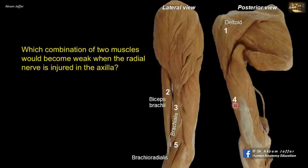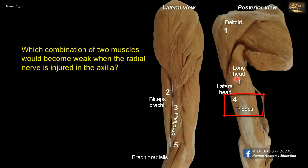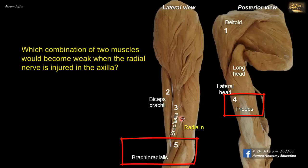And four is the triceps muscle. You can see here that only two heads of triceps are seen: the long head of triceps, arising from the infraglenoid tubercle of the scapula, and the lateral head of triceps. The medial head of triceps is located in a deeper plane. Of the muscles here that are supplied by the radial nerve, it is the triceps muscle, supplied by branches of the radial nerve as it lies in the axilla and in the spiral groove. And the other muscle is the brachioradialis. The radial nerve is located between brachialis and brachioradialis, and it supplies brachioradialis. So the two muscles that might become weak when the radial nerve is injured in the axilla are triceps and brachioradialis.